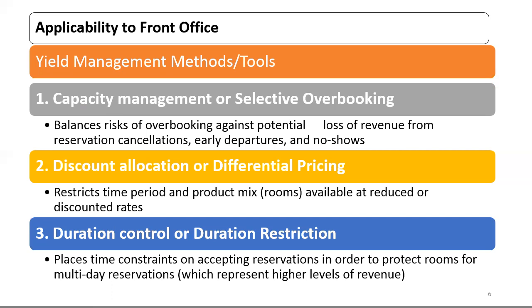Second: discount allocation or differential pricing. It restricts time period and product mix — rooms available at a reduced or discounted rate below rack rate for a restricted period of time. The main idea behind discount allocation is to sell the room and earn some revenue rather than keeping the room vacant and earning no revenue at all. This process of allowing discount by room type serves two purposes: protect enough remaining rooms at a higher rate, and it encourages upselling.